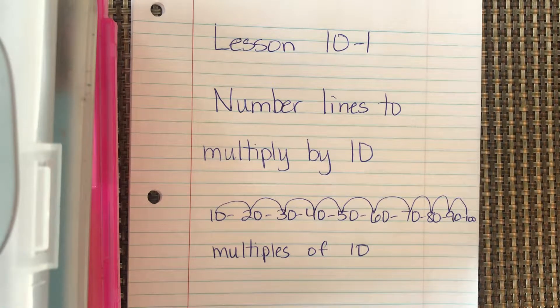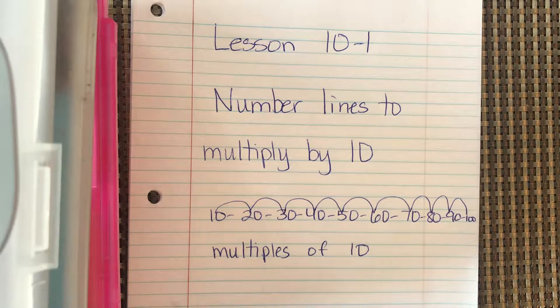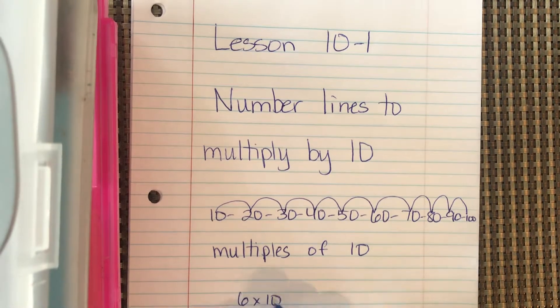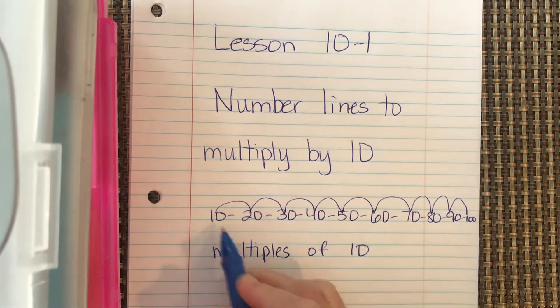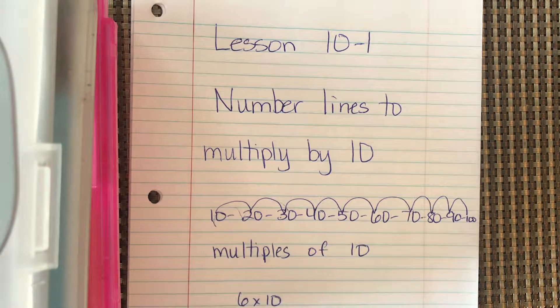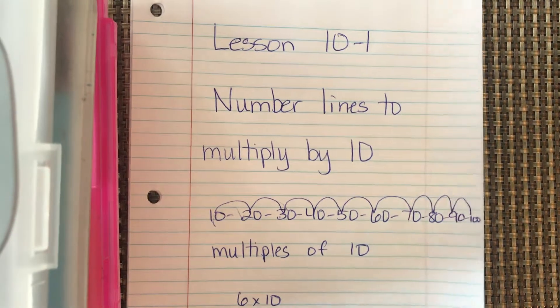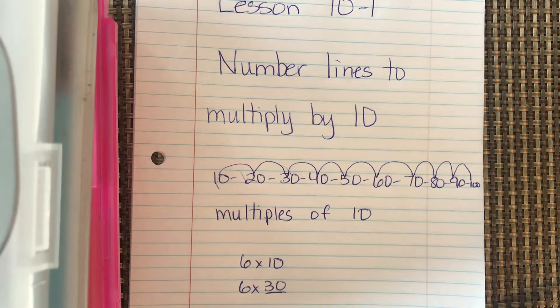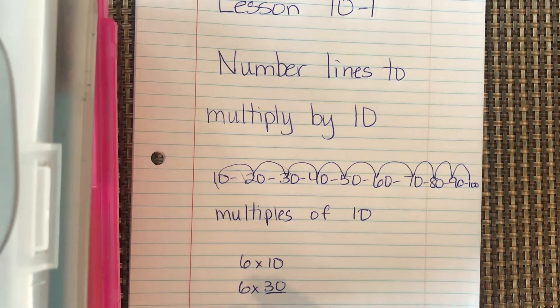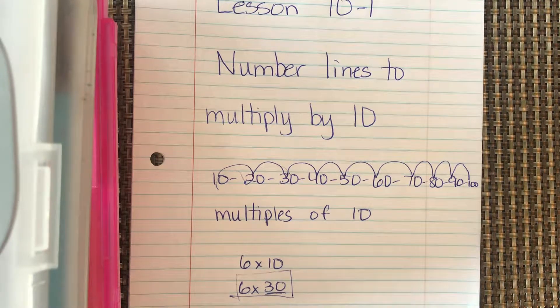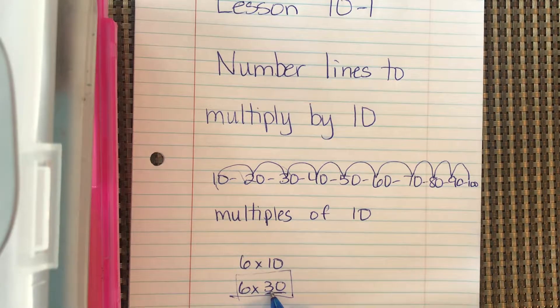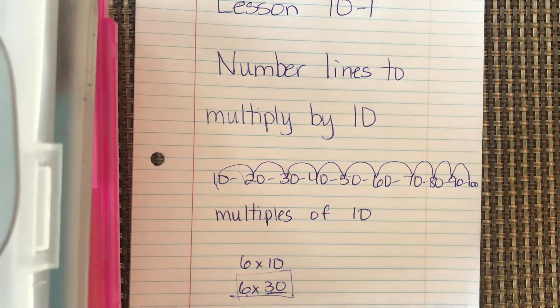So this chapter is going to focus on multiplying by multiples of 10. So it doesn't just mean going 6 times 10. It might be doing 6 times 30 because 30 is a multiple of 10. This is just an introduction lesson today to make sure that you are understanding exactly what 6 groups of 30 means and how we can use a number line to count by 30 six times.